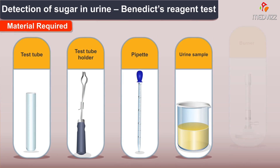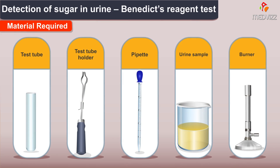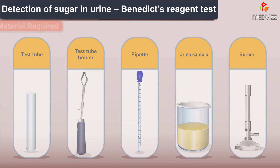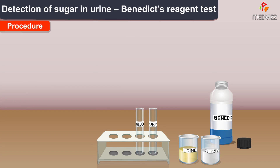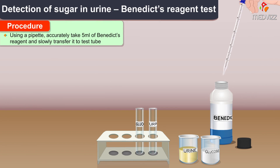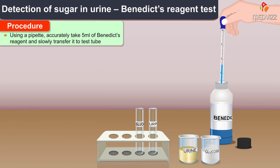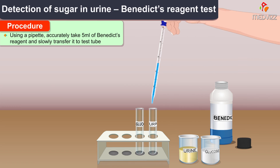Now let's get on to the procedure of the Benedict's test. Using a pipette, accurately take 5 ml of Benedict's reagent and slowly transfer it to the test tube.